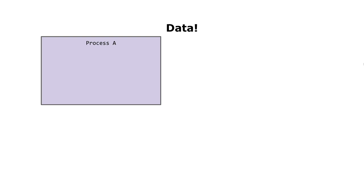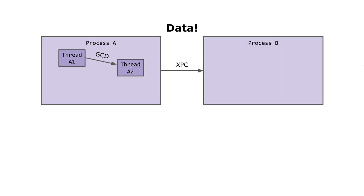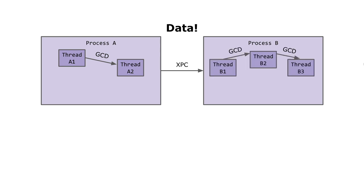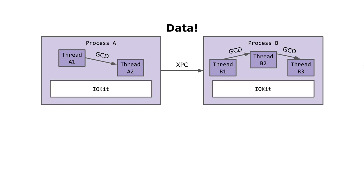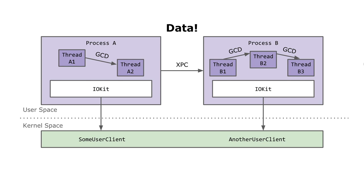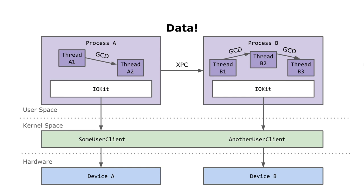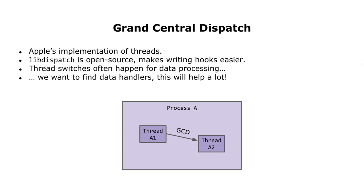So let's take a more coordinated look at how to locate data. A process runs threads. A thread can spawn another thread using Grand Central Dispatch. A process can interact with another process using cross-process communication. The other process will also have threads and one of these would parse the data that arrives via XPC. For interaction with drivers, one typical approach is using the IOKit shared library, which can create a user client to access functions in the kernel. Understanding Grand Central Dispatch will help us find hardware-related protocol handlers.